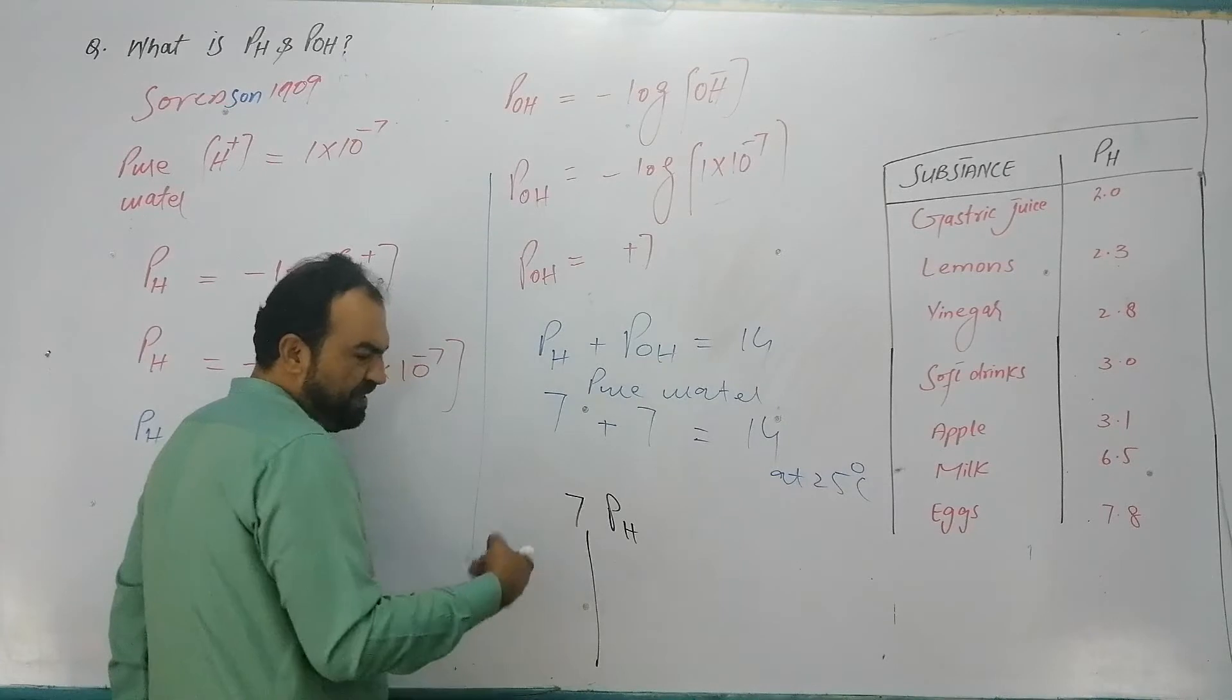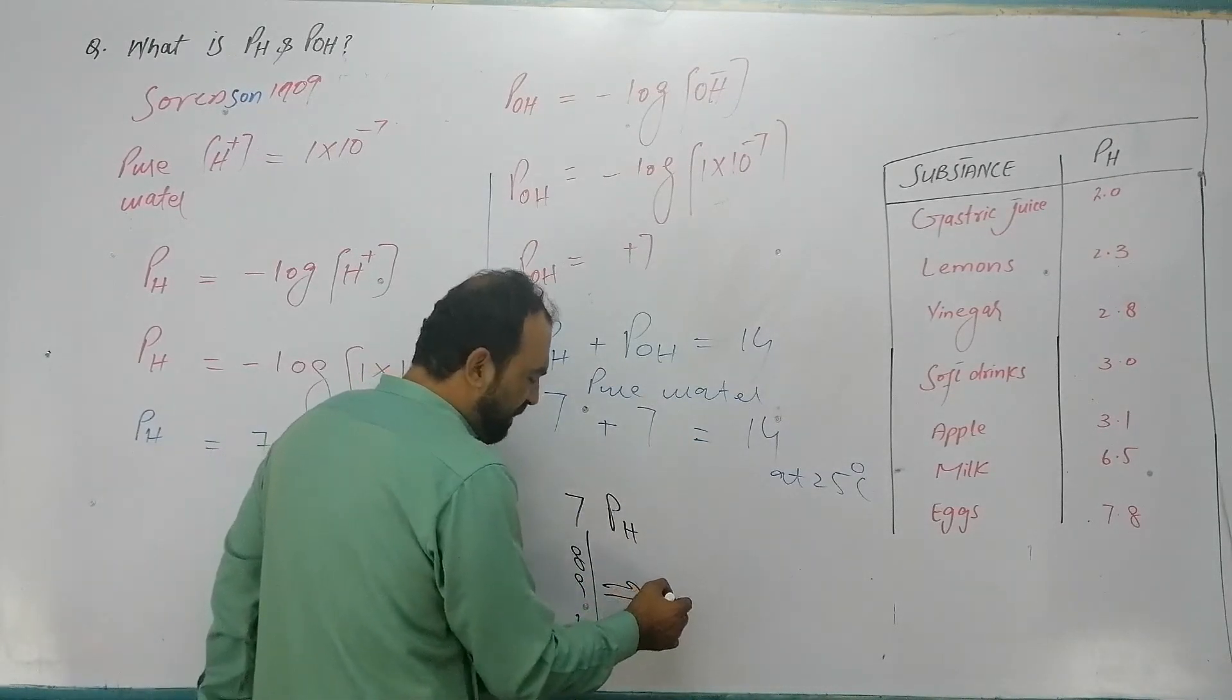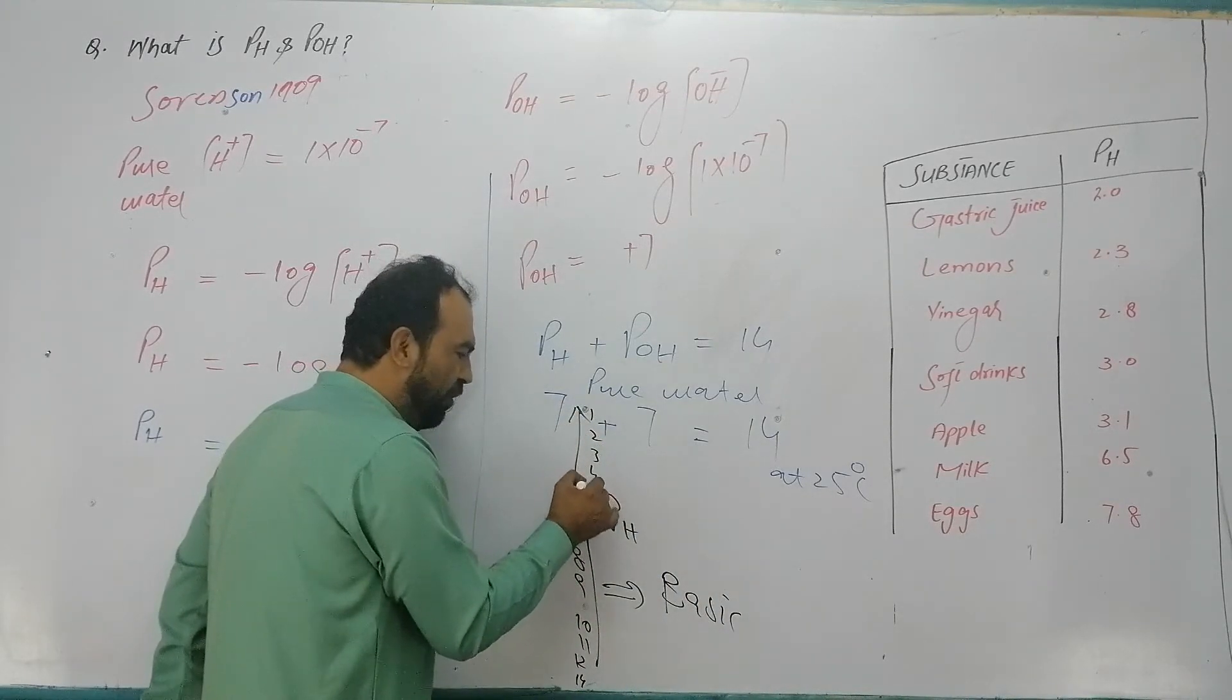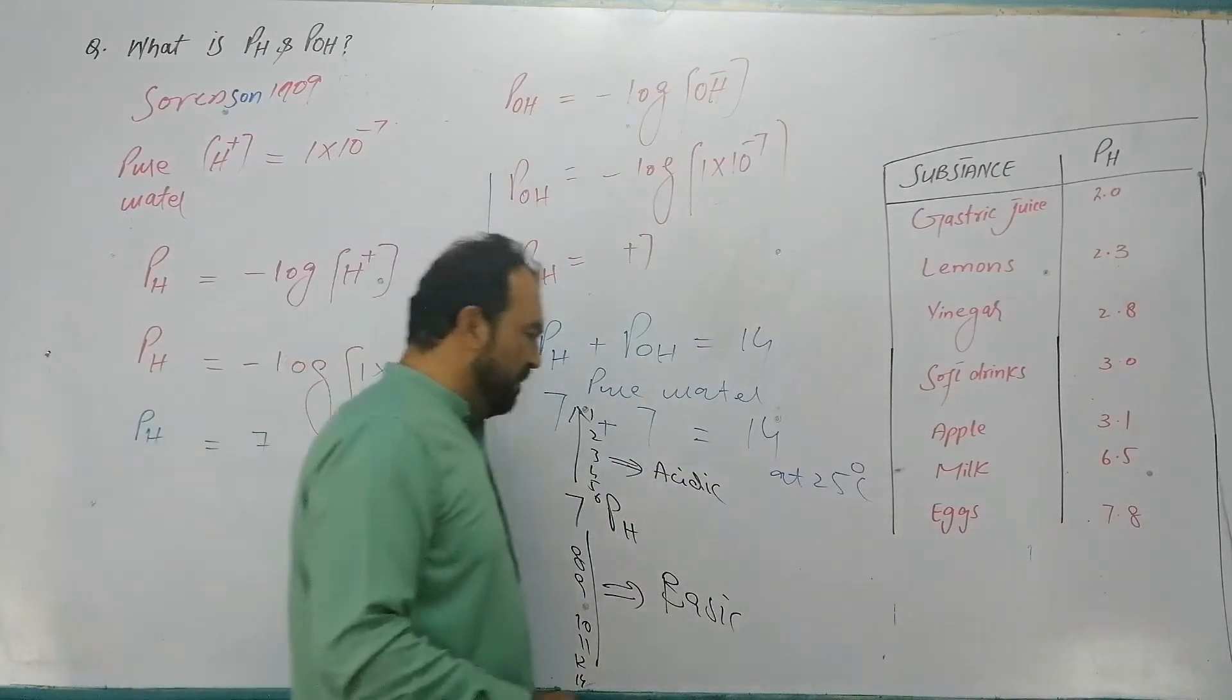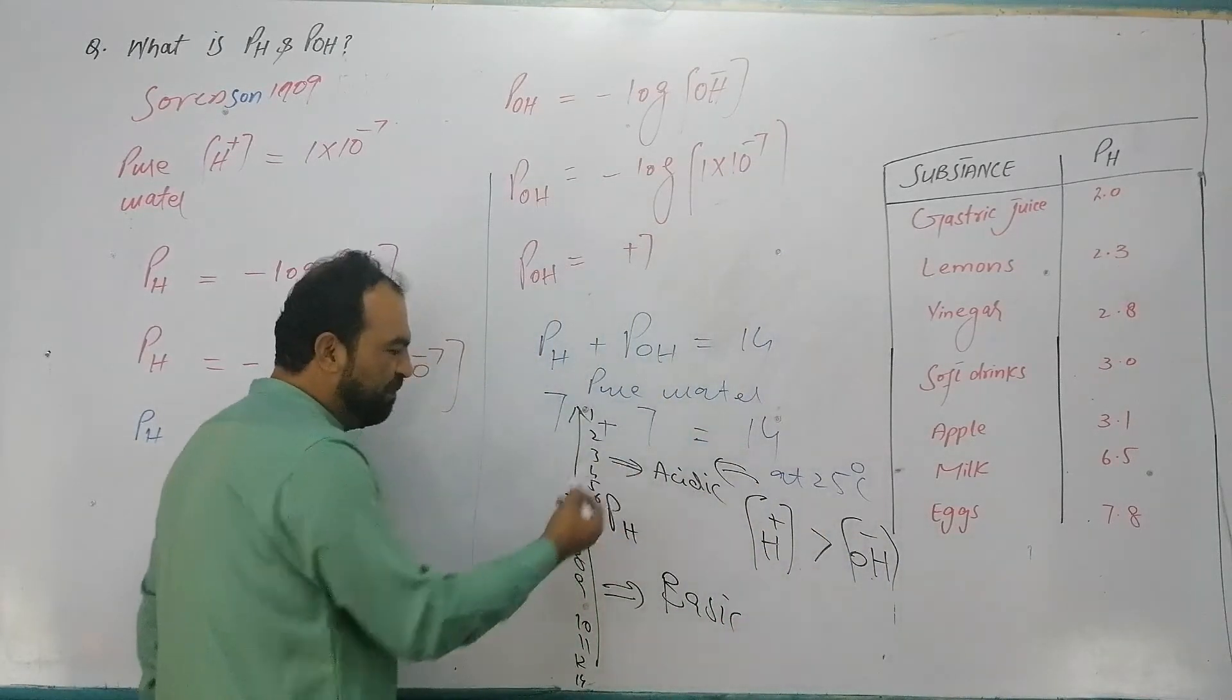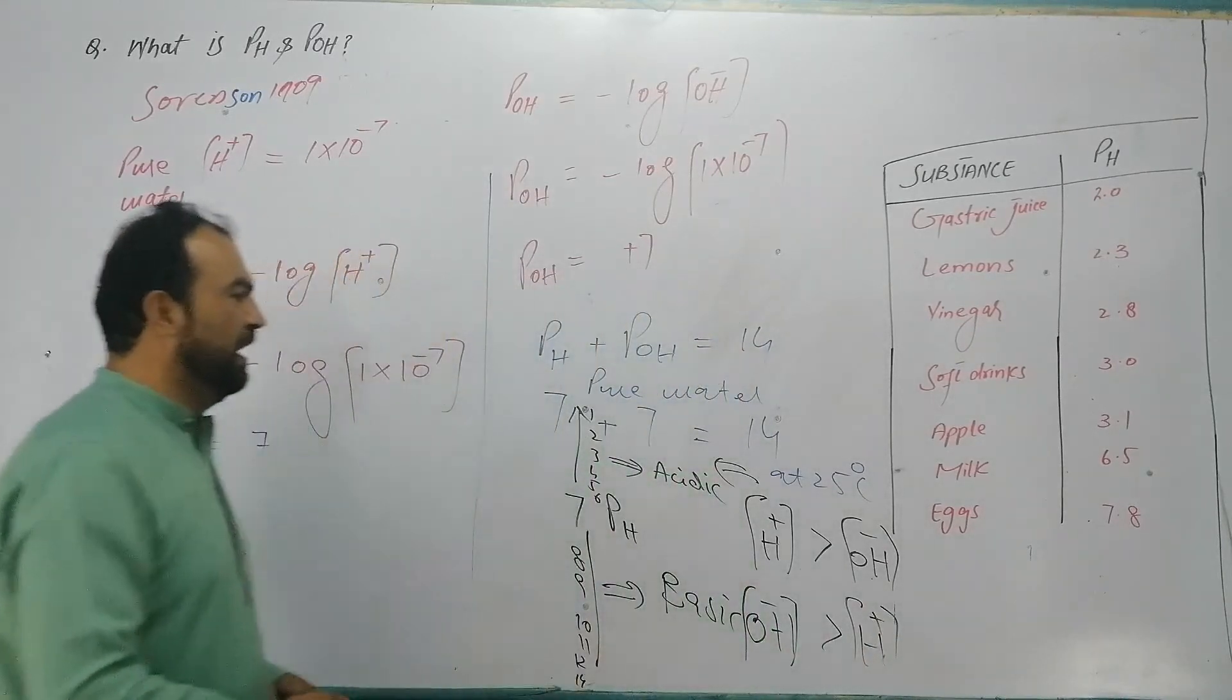Pure water at 25 degrees Celsius, pure water is neutral with pH 7. If pH increases above 7, up to 14, then your solution becomes basic. And if it is less than 7, like 1, 2, 3, 4, 5, 6, then your solution will be acidic.